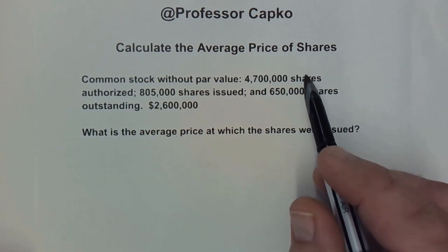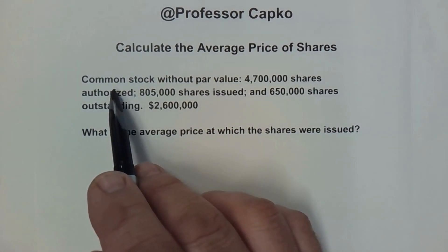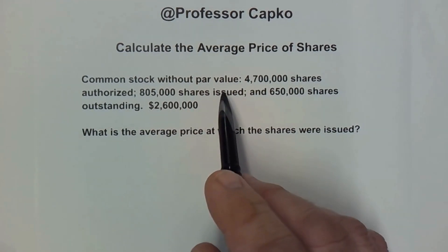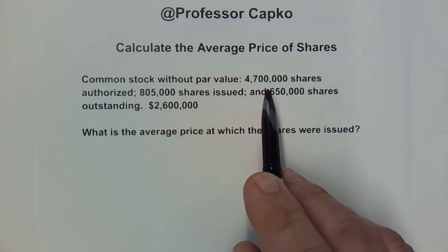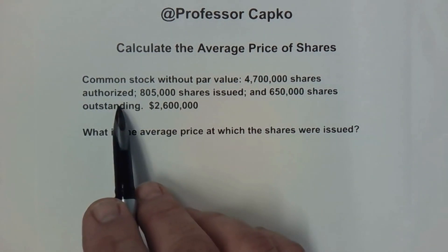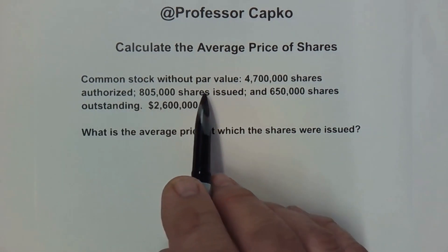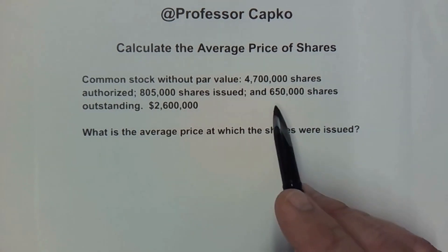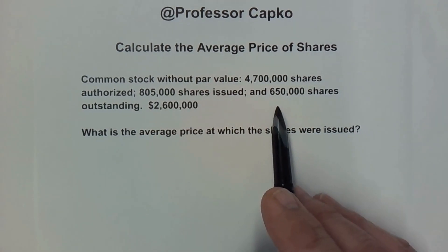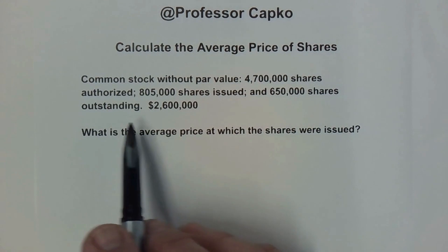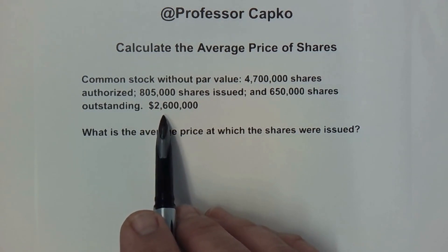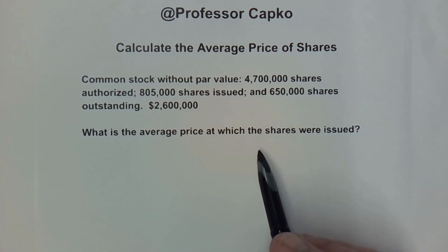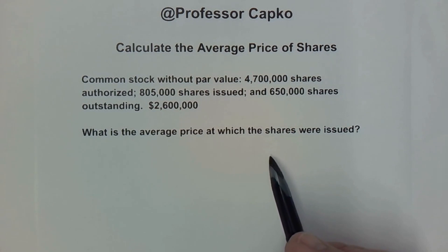In this question here, we are told that we have common stock without par value and 4,700,000 shares have been authorized, 805,000 shares have been issued, and 650,000 shares are outstanding. The common stock entry is for $2,600,000. What is the average price at which the shares were issued?